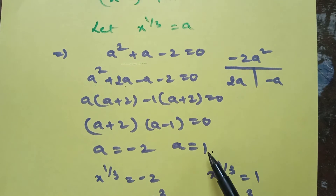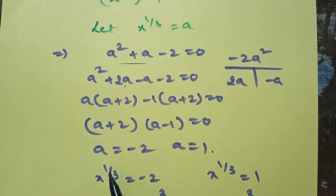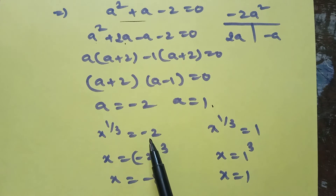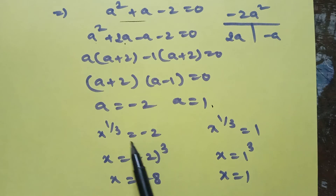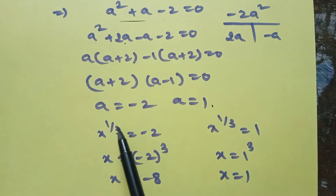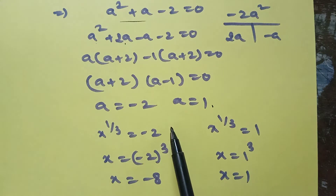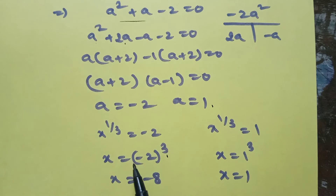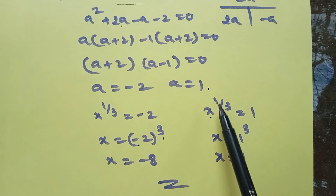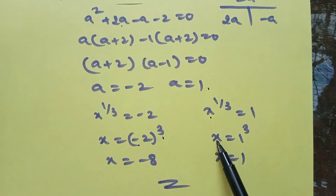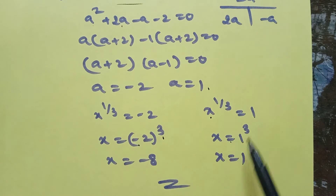Since a means x power (1/3), from x power (1/3) = minus 2, cubing both sides gives x = (minus 2) cubed = minus 8. From x power (1/3) = 1, cubing both sides gives x = 1 cubed = 1.